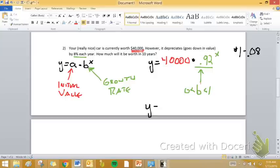For this particular problem, we are going to do y equals 40,000 times 0.92 to the 10th power, because we're worried about 10 years later. And we'll use our function to work that out.